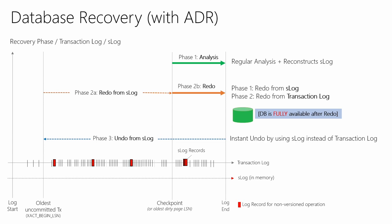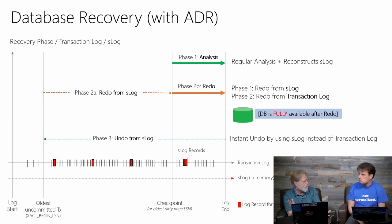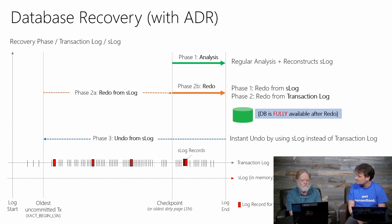So this is going to be way faster than the older approach. We had a customer in the lab within the last couple of weeks — they did some testing with ADR. They had a very active update workload with a long-running transaction and did a rollback of that long-running transaction. Without ADR, it took about a minute and a half to do that. Then they retried that same scenario with ADR, and the time it took to do the recovery was zero seconds — they couldn't even measure it, it was so fast.